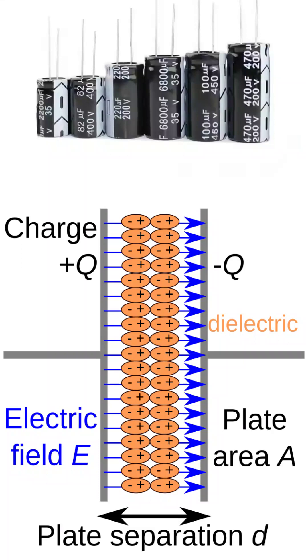This is a capacitor with a dielectric material placed between its plates. The gray horizontal bars represent the conducting plates of the capacitor. The orange region in the middle is the dielectric, an insulating material inserted between the plates.